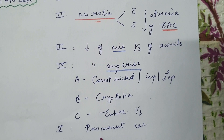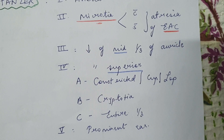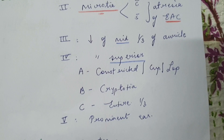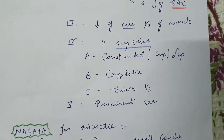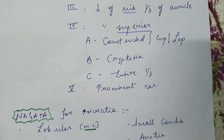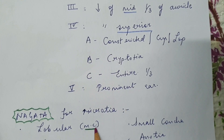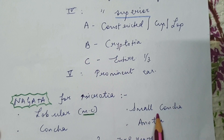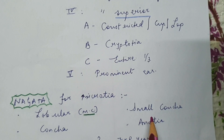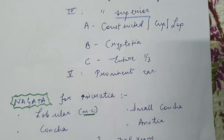Number five is the prominent ear, which is also an important topic. Coming to microtia specifically, there is a further classification given by Professor Nagata, where there are four subtypes. The commonest one is the lobular type of microtia, where a sausage-shaped remnant is usually found. Then there is a concha type, a small concha type where there is mainly hypoplasia of the concha, and there can be a complete absence of the ear, that is anotia.